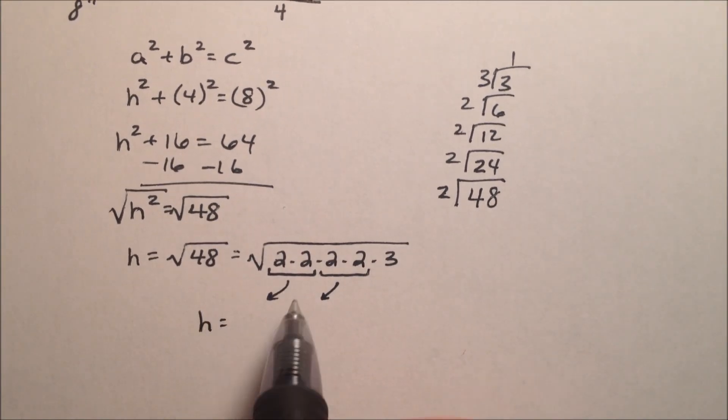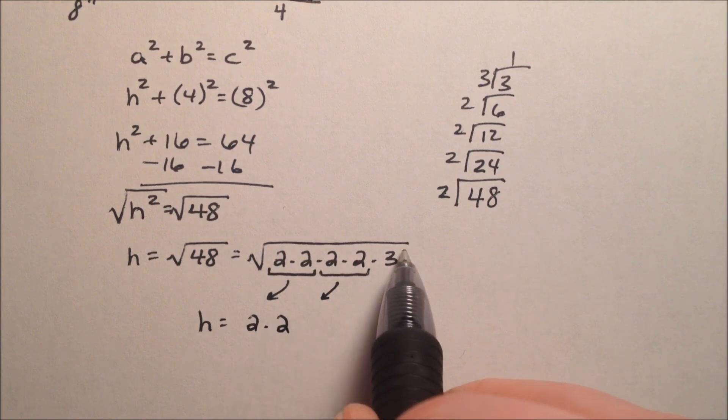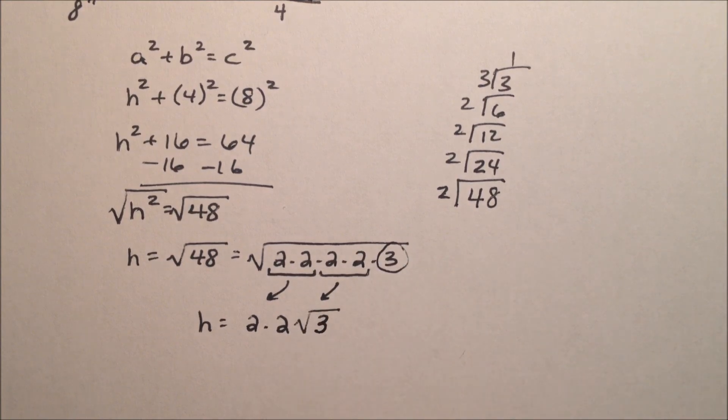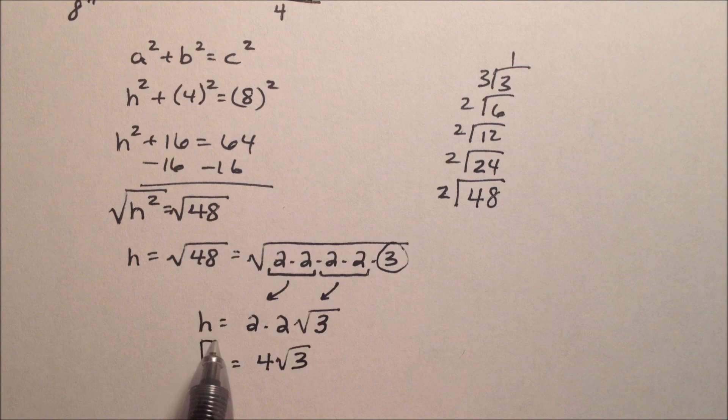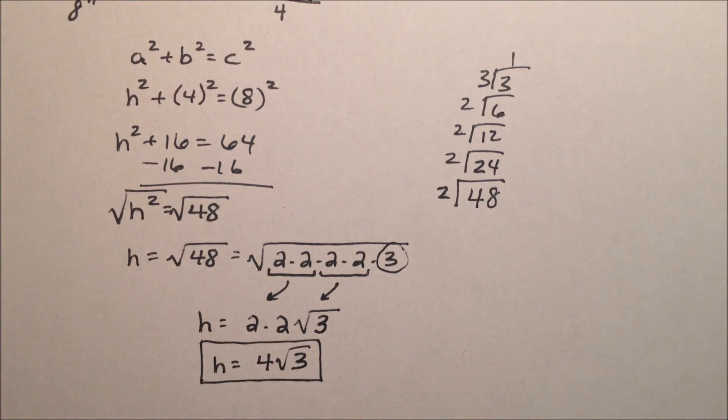So the height will be, this 2's on the outside, this 2's on the outside, this 3 didn't have anybody to pair up with, so he stays on the inside. So the final height of this is going to be 4 times the square root of 3 when you simplify the square root of 48.